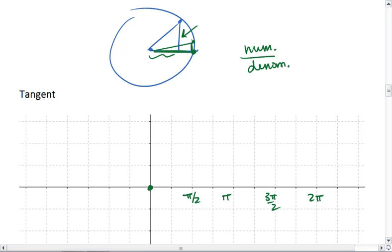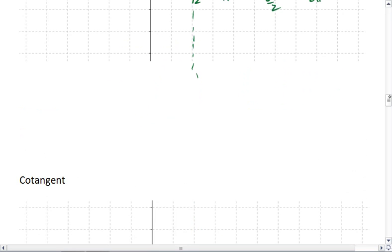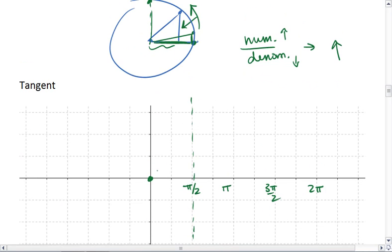As this dot moves up, our numerator increases and our denominator decreases, making the entire fraction increase until we reach the top. When there's actually no horizontal distance, our denominator goes to 0. When that happens, we have a vertical asymptote. So for tangent, we go up like this.